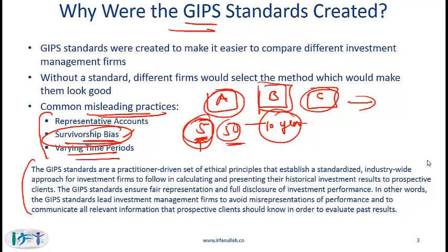Here is a formal definition worth learning: the GIPS standards are a practitioner-driven set of ethical principles that establish a standardized, industry-wide approach for investment firms to follow in calculating and presenting their historical investment results to prospective clients. The GIPS standards ensure fair representation and full disclosure of investment performance — leading firms to avoid misrepresentation and to communicate all relevant information prospective clients need to evaluate past results.